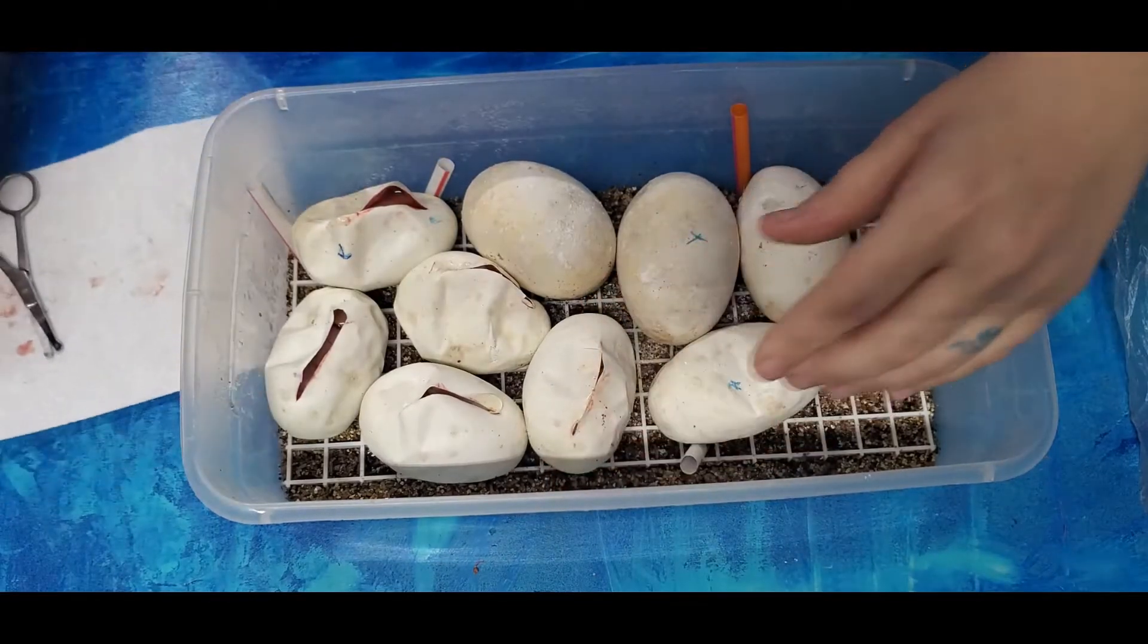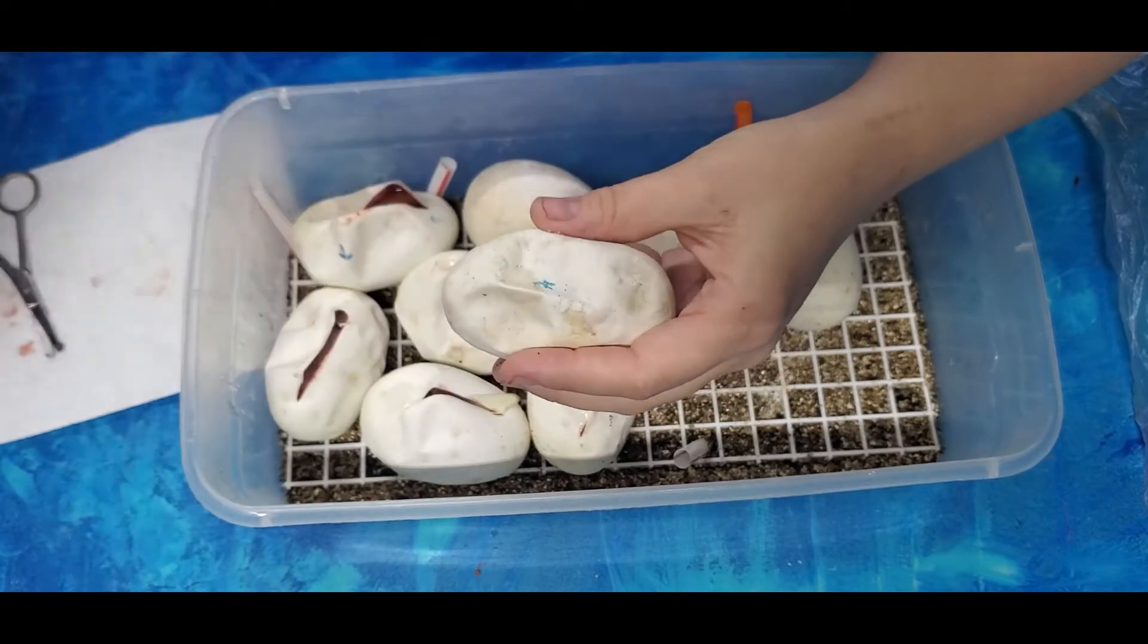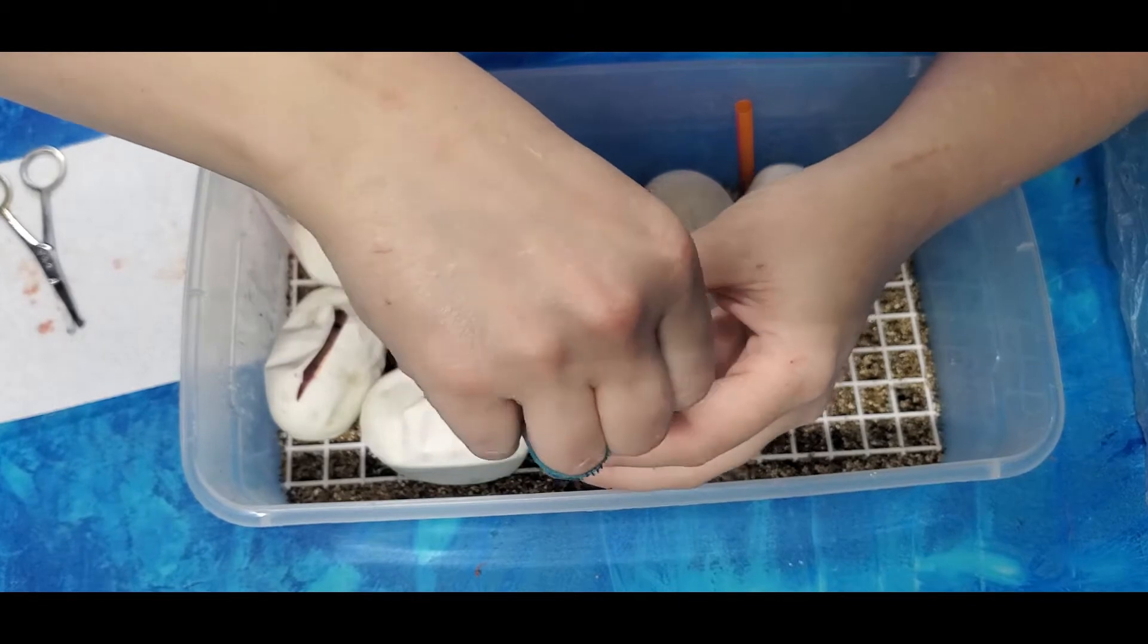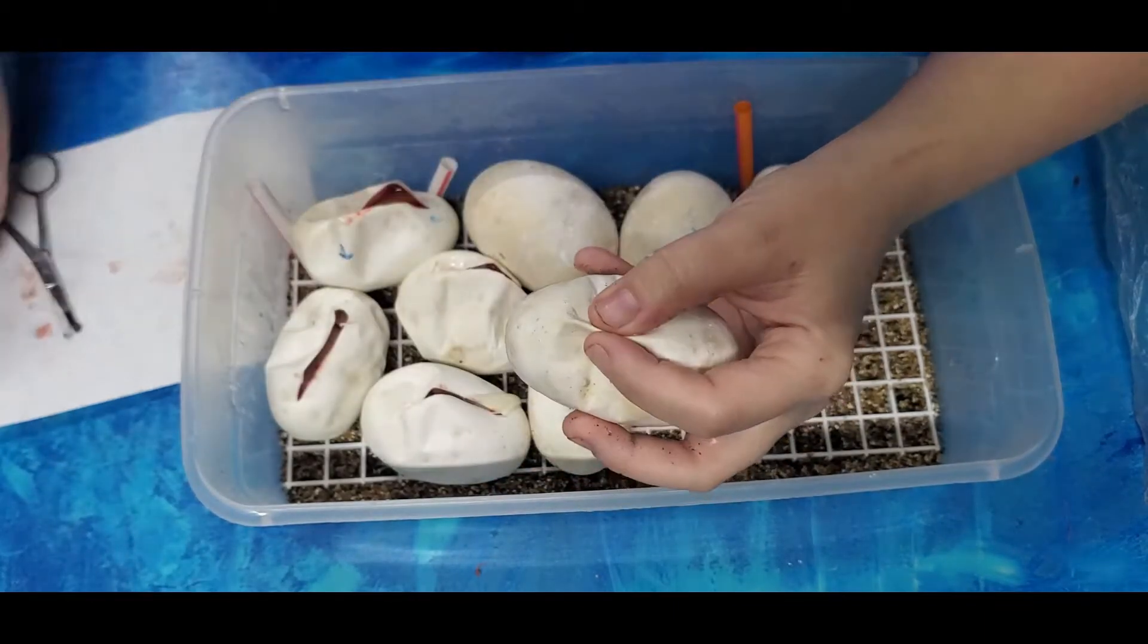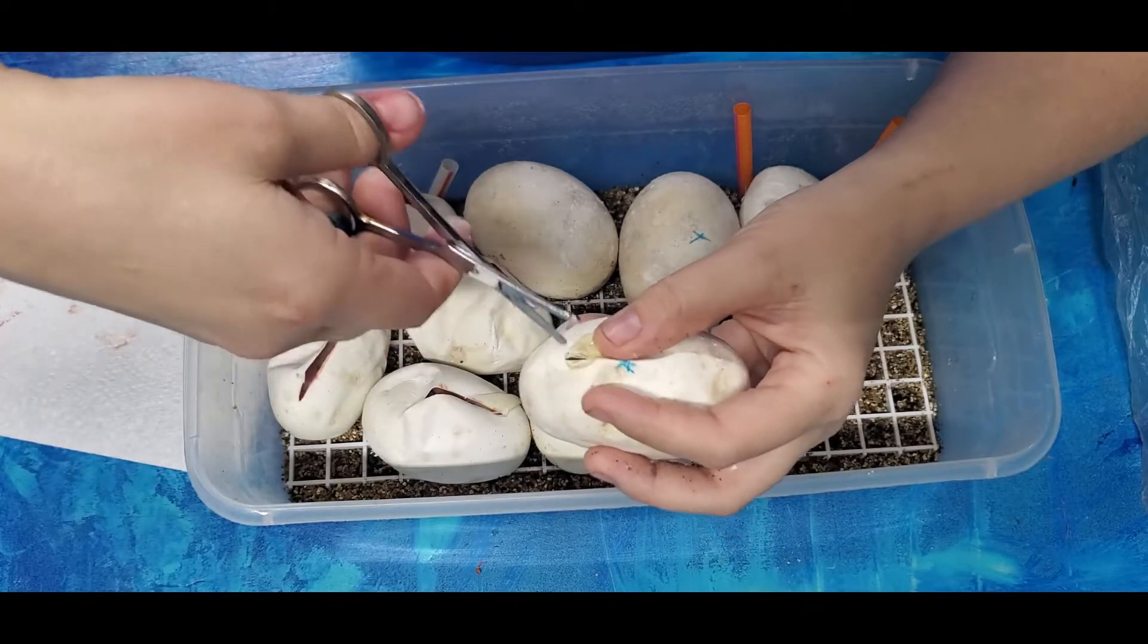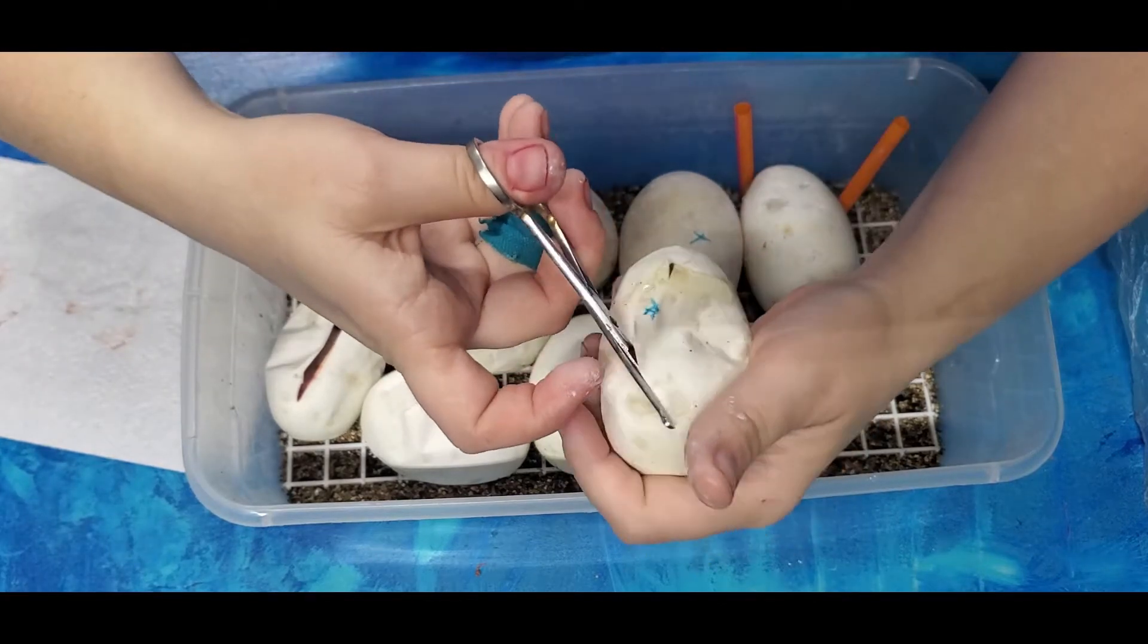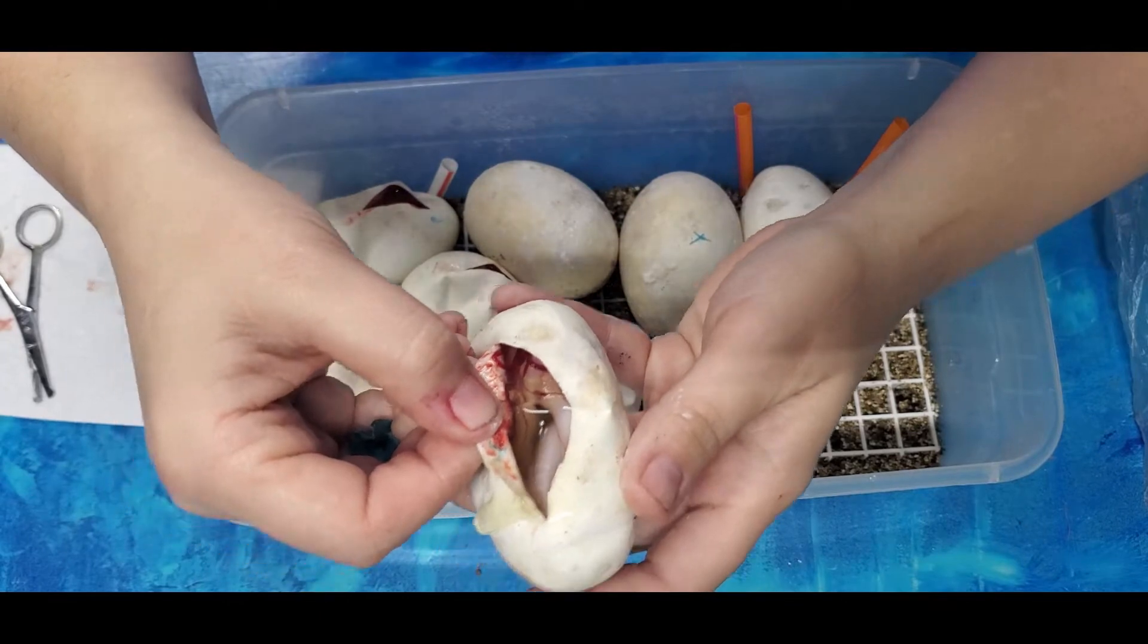I paired a white snake with a purple passion, so the only way I'd have anything that's not white in here is if she used some sperm from the males last year. And there we go. Another white one.